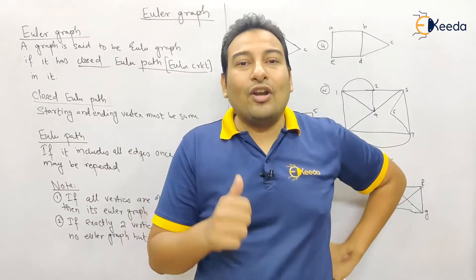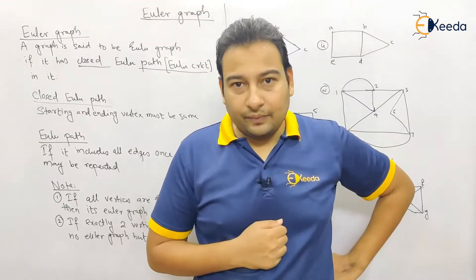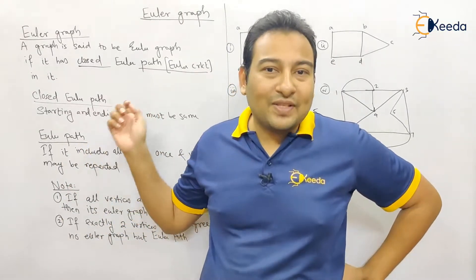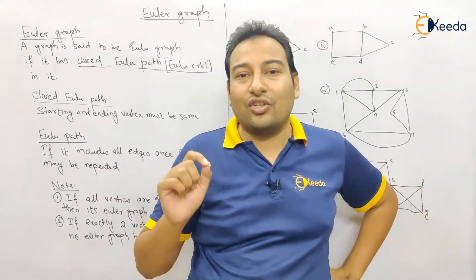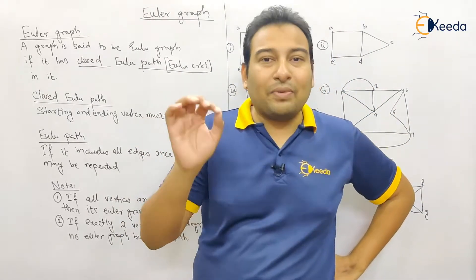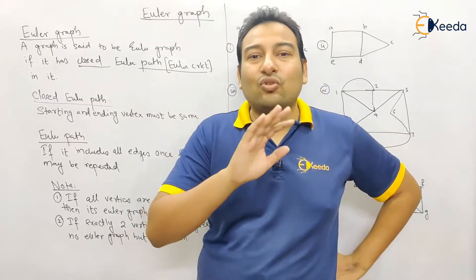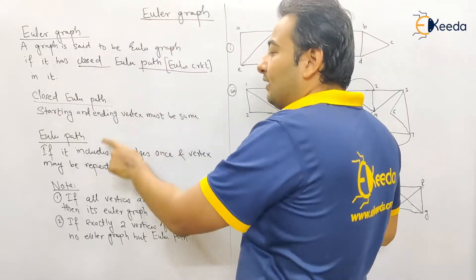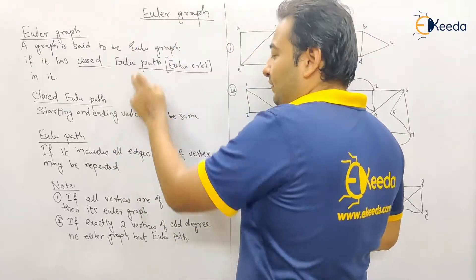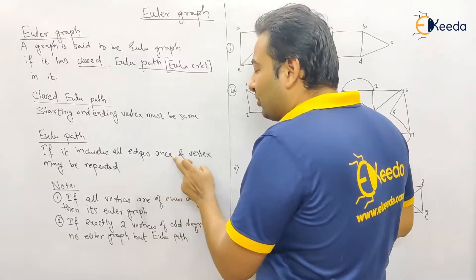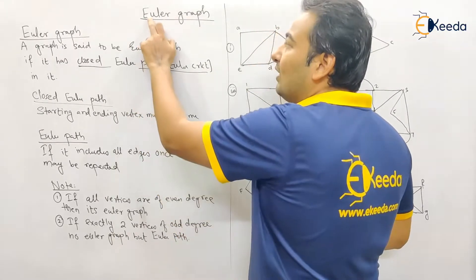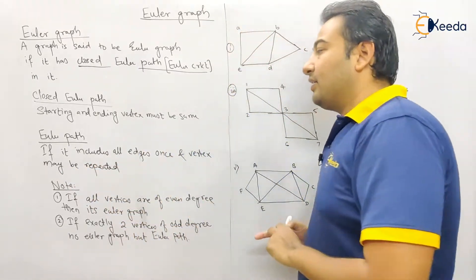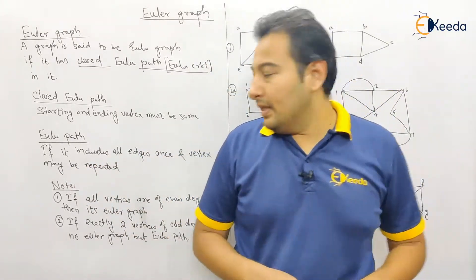Now, what is an Euler path? An Euler path means each and every edge must be visited once — there is no restriction on vertices. Here's how I remember this: Euler starts with E, and edges also starts with E. So Euler path includes all edges once, and vertices may be repeated.